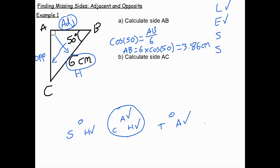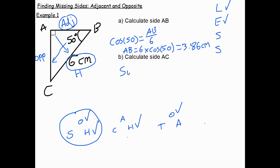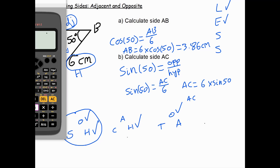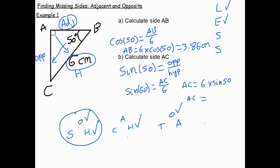To find side AC, we tick off what we know and want. We want the opposite — tick any O. We have the hypotenuse — tick H. Sine has been ticked twice, so sine of 50 equals opposite over hypotenuse — AC over 6. Multiplying both sides by 6 gives AC = 6 × sine 50 = 4.60 to two decimal places.